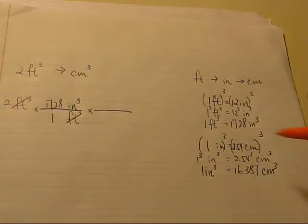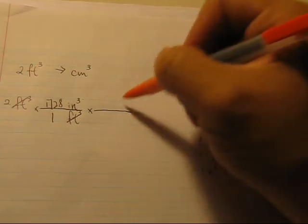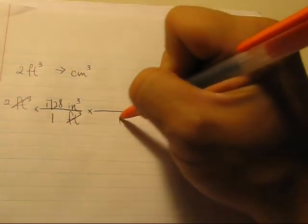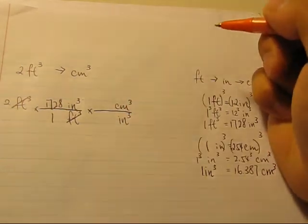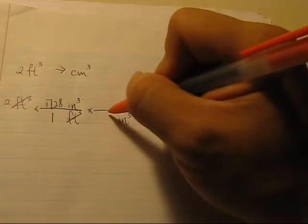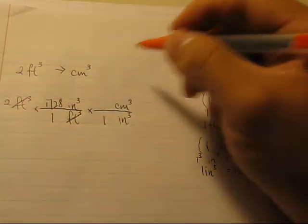Alright, now once we have this relationship, we can put it right here. We want to cancel out the cubic inches, and then we want cubic centimeters on top. So the numbers go back to the relationship.